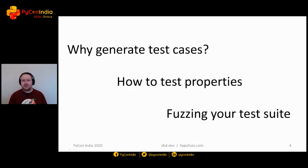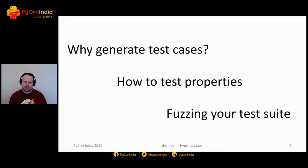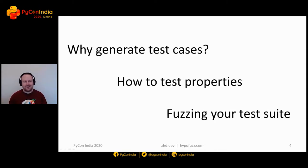For this talk, I'm going to split it into three rough parts. In the first part, I'm going to talk about why we would automatically generate test cases and how we would get the computer to do that for us. In the second, I'll talk about how to test properties of your code — thinking about the more general things that should always be true rather than specific inputs. And then last of all, I'm going to introduce you to some exciting work I've been doing recently about fuzzing your test suite.